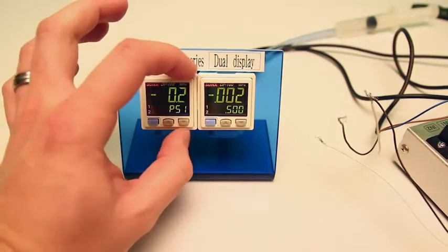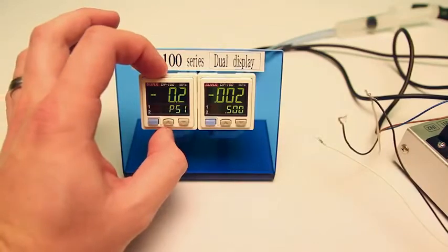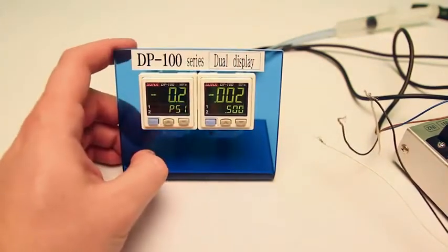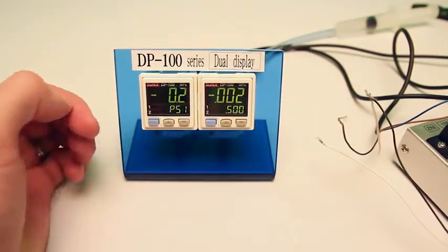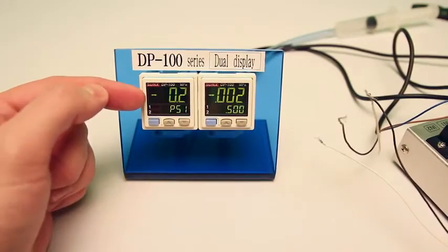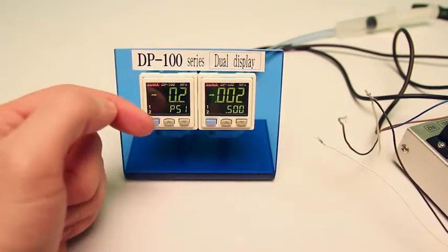What this will do is take a set of parameters from one sensor and transfer it over to a sub-sensor. This is great for machine builders who are constantly setting the sensors to the same parameters. You only have to do it once and then copy it every single other time.